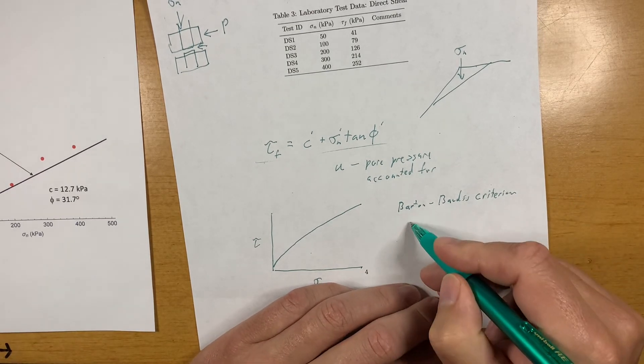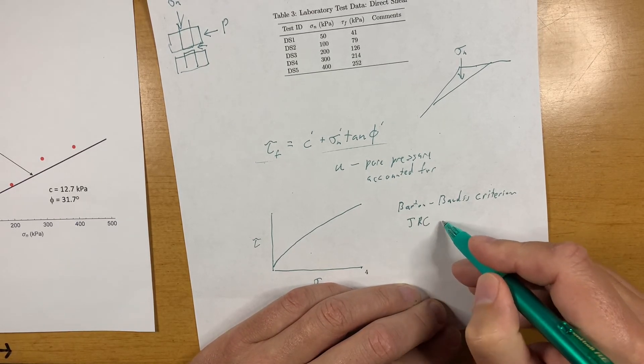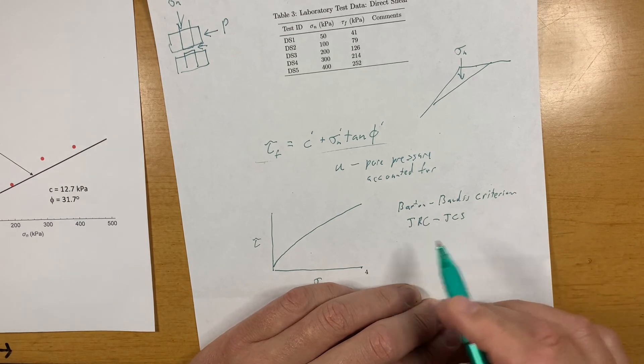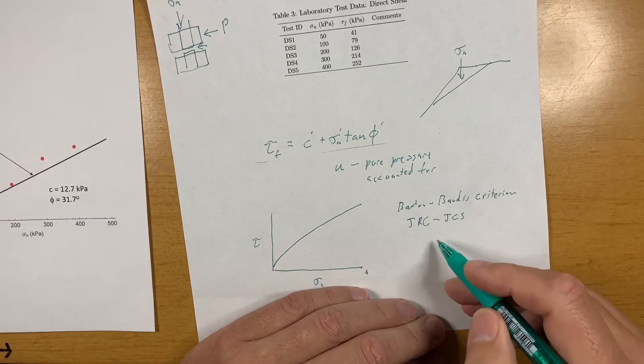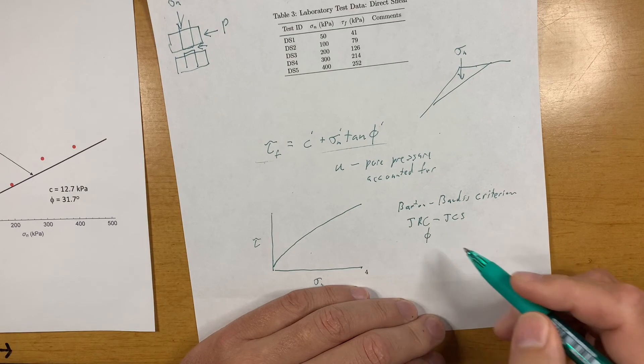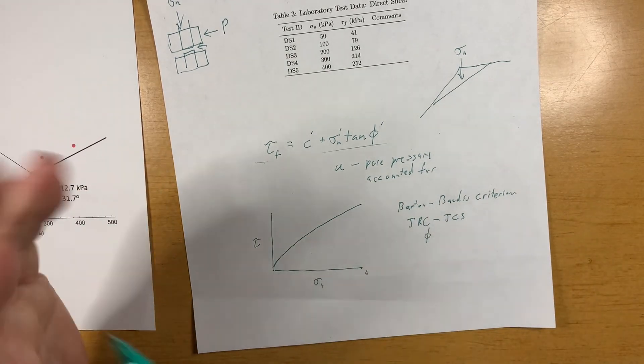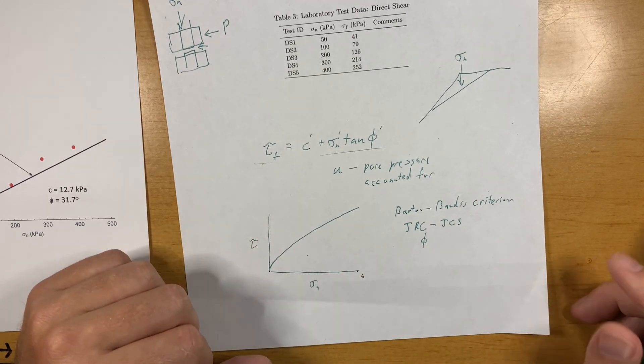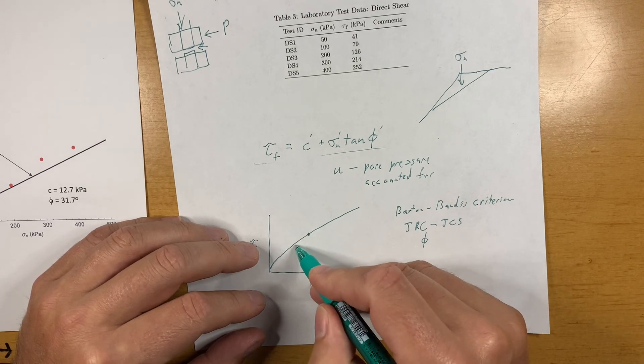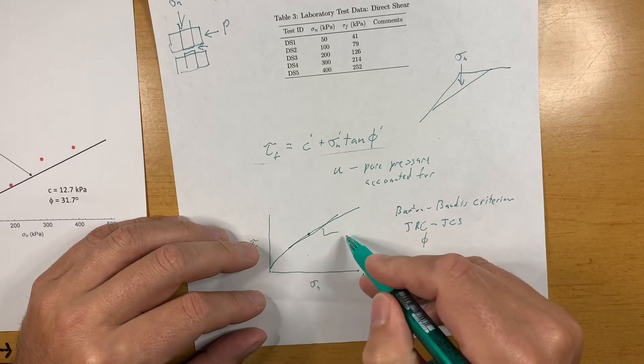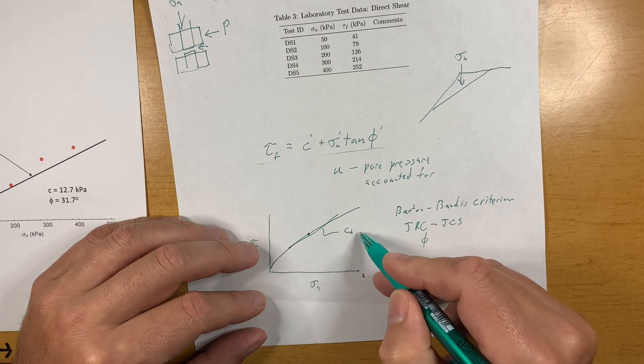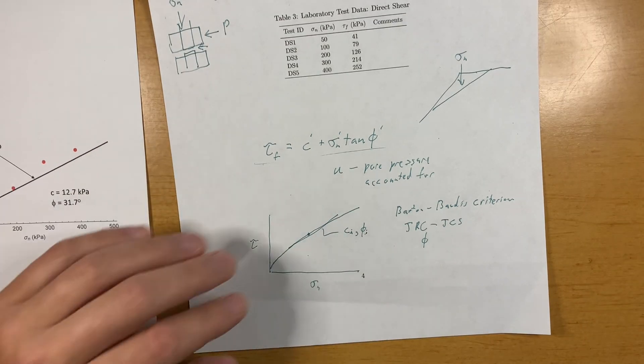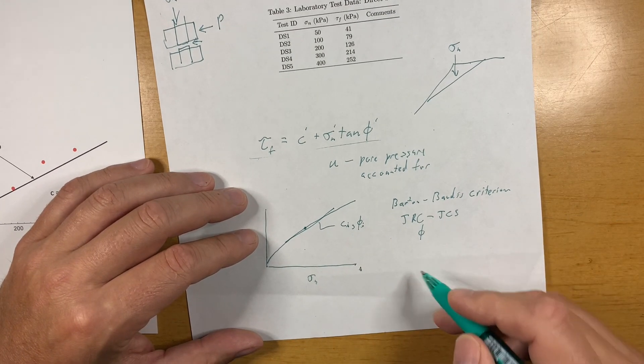And there's a criterion called the Barton-Bandis criterion that fits this very well. And that uses the parameters JRC, the joint roughness coefficient, and JCS, or the joint wall compressive strength. And also makes use of a basic or residual friction angle of that rock joint to help you come up with a nonlinear failure envelope. And at any given point, that could be linearized and you can come up with an instantaneous C and phi.